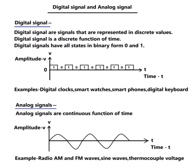Analog signals. Analog signals are a continuous function of time. In the diagram you can see the amplitude of the signal — a sine wave — varying with time continuously.